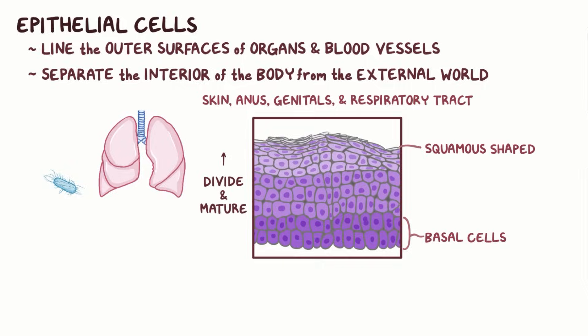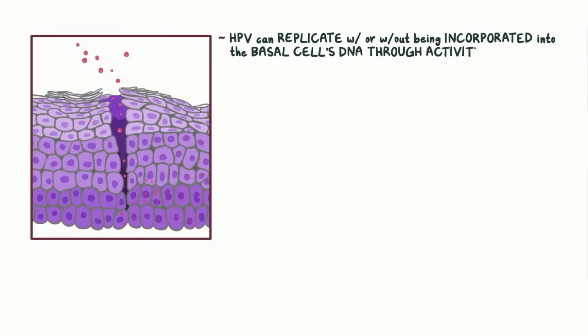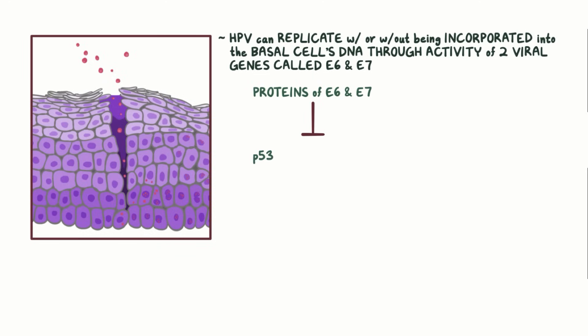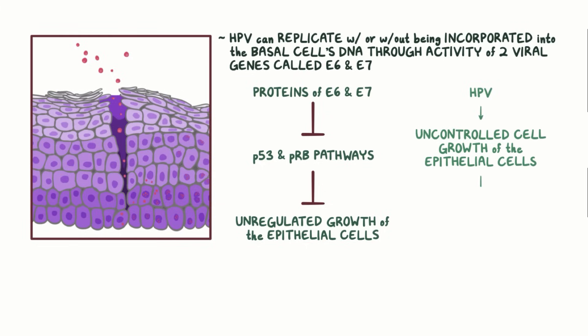Typically, basal cells are well protected under all those layers. But if there are abrasions or cuts in the epithelium, HPV can gain access to and infect the basal cells. Once that happens, HPV can replicate with or without being incorporated into the basal cell's DNA through the activities of two particular viral genes called E6 and E7. The proteins of these genes cause dysregulation of tightly scheduled replication of the epithelial cells by altering the p53 and retinoblastoma protein, or pRB, tumor suppressor pathways that typically prevent unregulated growth. In this way, HPV causes uncontrolled replication of the epithelial cells, forming warts, and disrupts the normal structure of the epithelium, forming lesions.